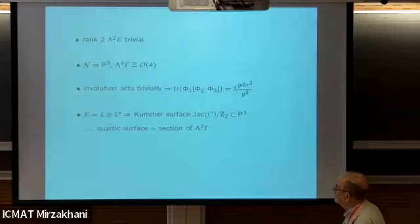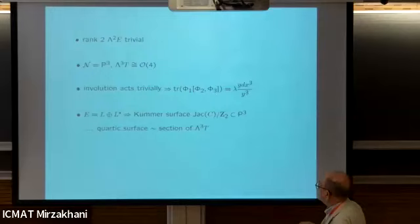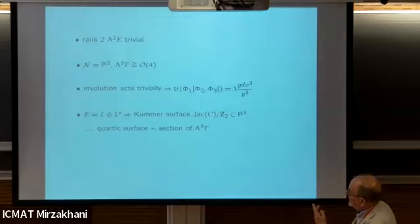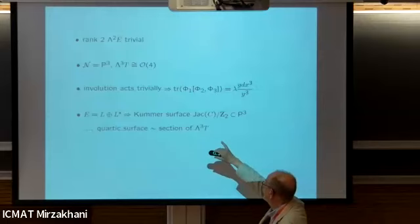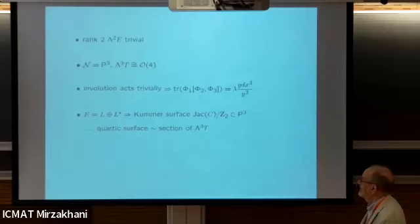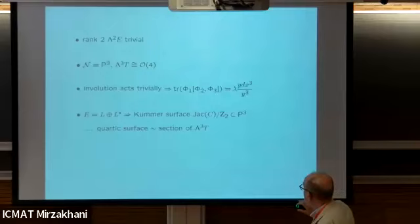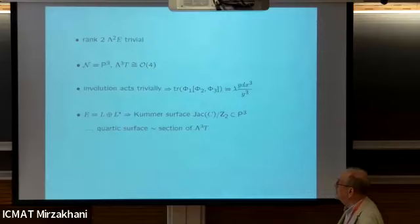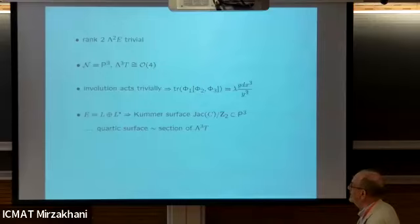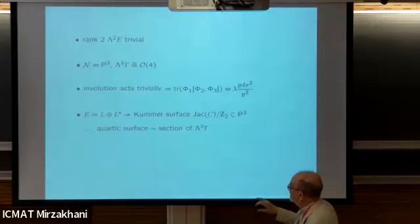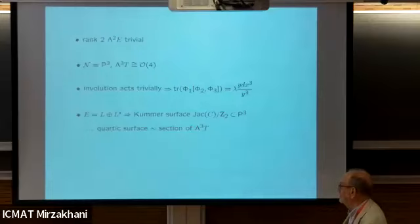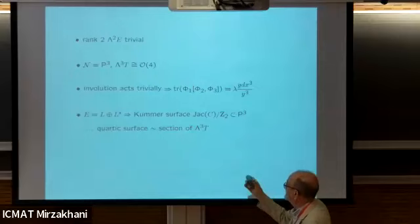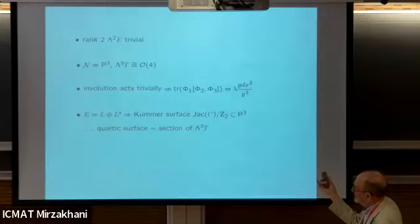On the other hand, the ones we're constructing this way are more restricted. In particular, the hyperelliptic involution on the curve acts trivially on this moduli space. So if we evaluate the degree-three invariant on three Higgs fields, we get a cubic differential invariant under y goes to minus y - and that's just a one-dimensional space. What we're looking for is a distinguished quartic polynomial in P^3. Indeed there is one: the Kummer surface, if you look at equivalence classes of direct sums of line bundles of degree zero, gives us a Kummer surface inside P^3. That's a singular quartic surface - the corresponding polyvector field in this case.